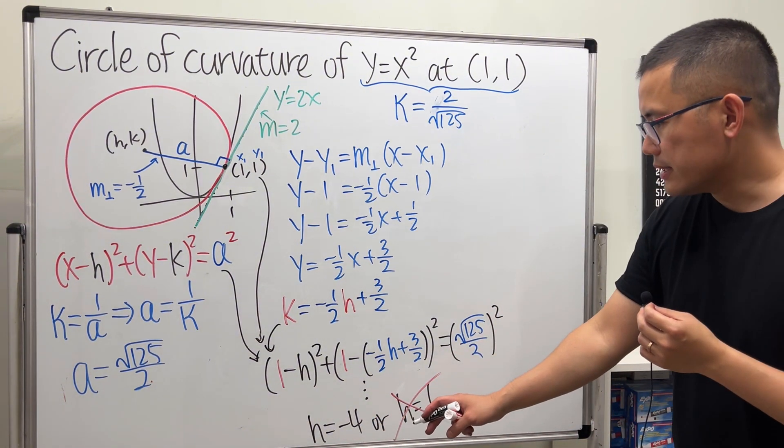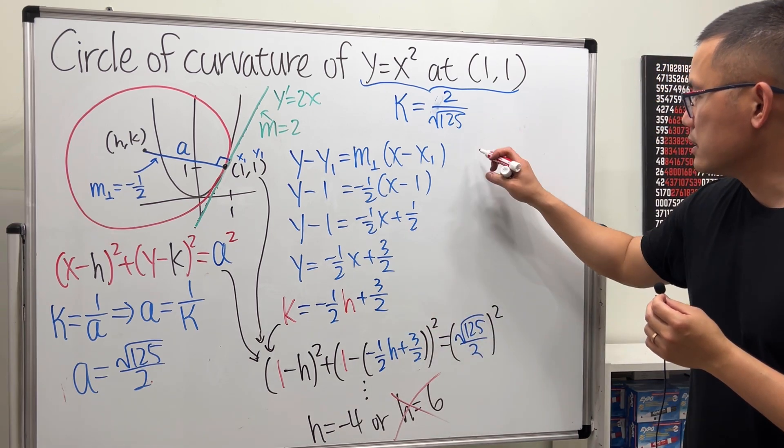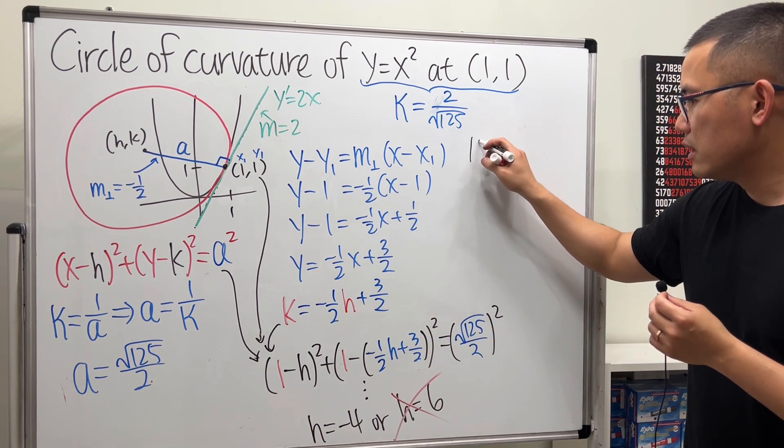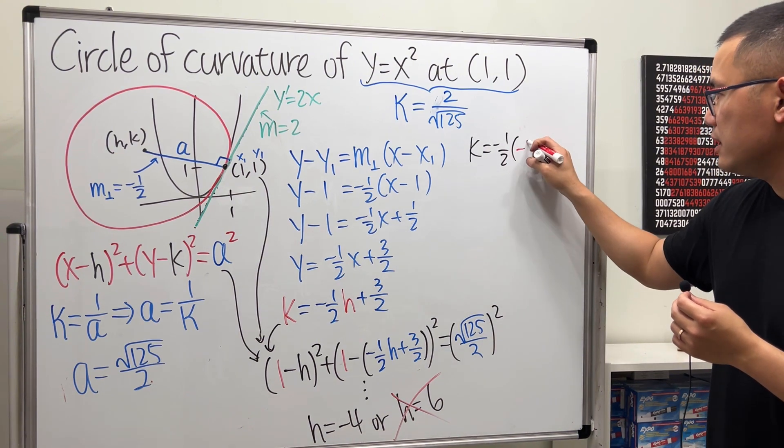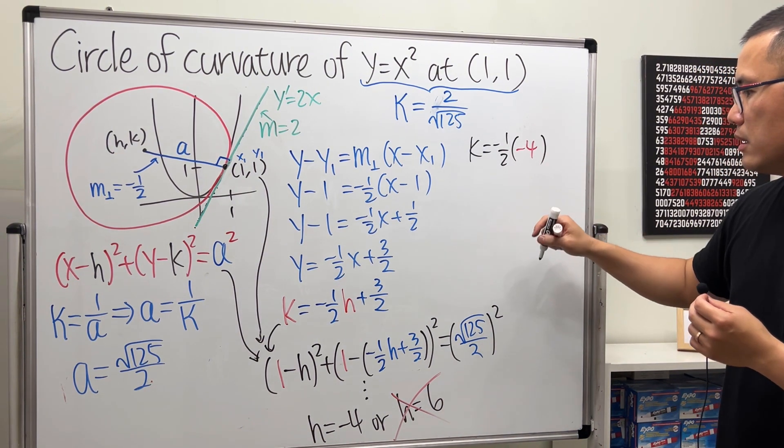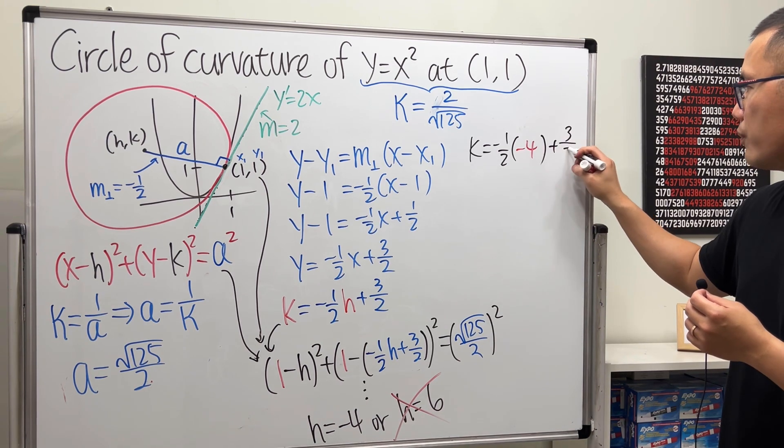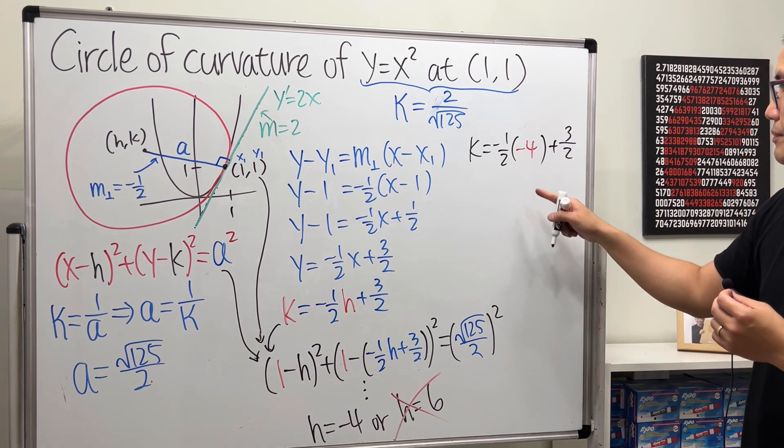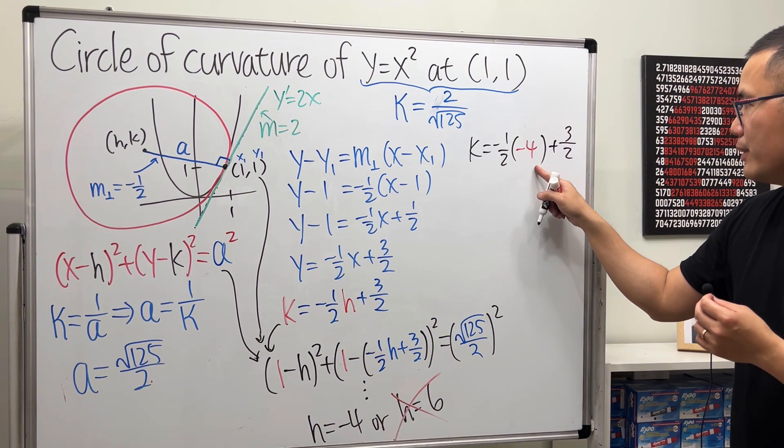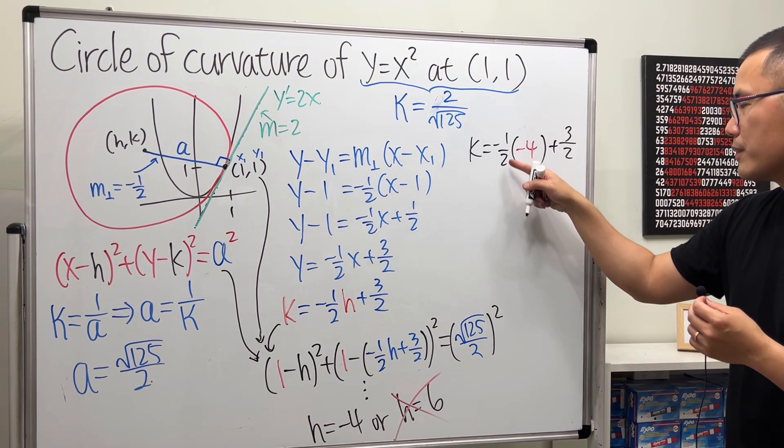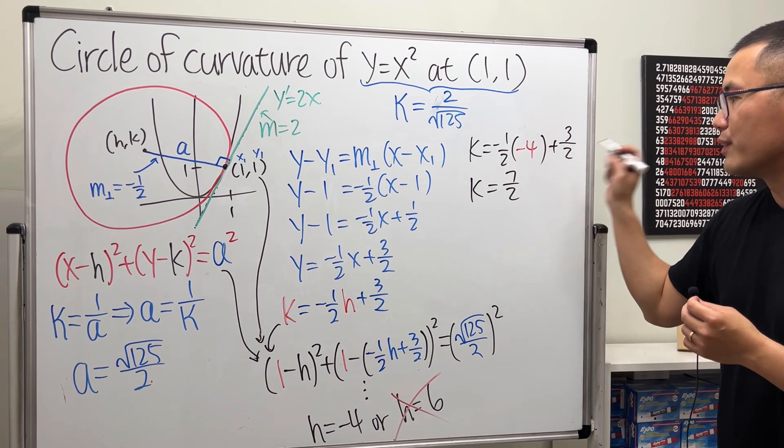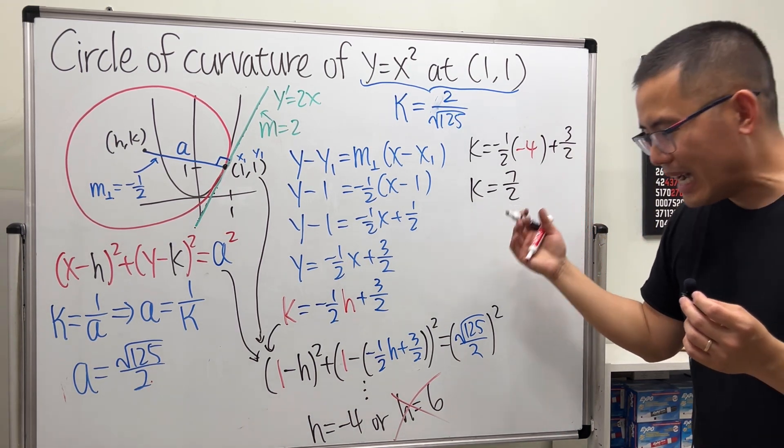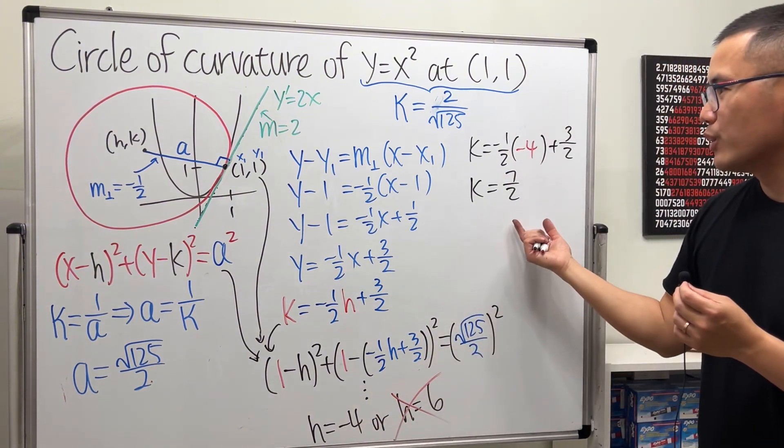So when h is negative 4, we can just put this back right here. So we can see that k is going to be negative 1/2 times negative 4 and then plus 3/2. So that is 2 plus that, which is 4/2 plus that. So k is equal to positive 7/2. There we have it. We have the h and also have the k.